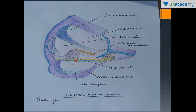When the perilymph is set into motion, it sets the basilar membrane vibrating. This is the organ of Corti, which has hair cells — the sensory cells of the organ of Corti. When these vibrate, the hairs of the hair cells start touching the tectorial membrane, and the cells are stimulated. The movement of the hair generates an action potential within these cells, which is carried as an impulse. The action potential is generated due to the rubbing of the hair against the tectorial membrane. This action potential is transmitted as an impulse through the cochlear nerve to the brain, which interprets it as sound.